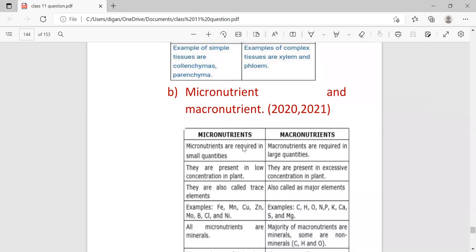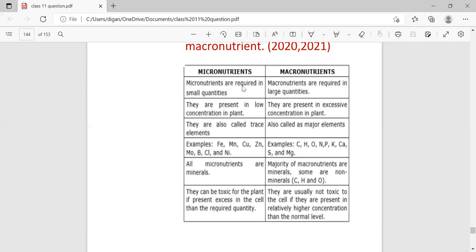Micronutrient and macronutrient - continuously repeated in 2021 and 2020. Micronutrients are required in small quantities, whereas macronutrients are required in large quantities. They are present in low concentration in plants; they are present in excessive concentration in plants. They are also called trace elements; they are also called major elements. Example is Fe, Mn, copper, zinc, etc. Examples are carbon, hydrogen, oxygen, nitrogen, etc. All micronutrients are minerals. Most macronutrients are non-minerals. They can be toxic for the plant if present in excess, whereas macronutrients are usually not toxic to the cell if they are present in relatively higher concentration than normal level.